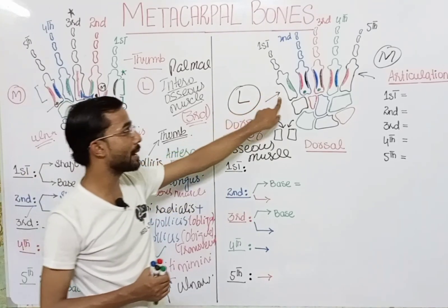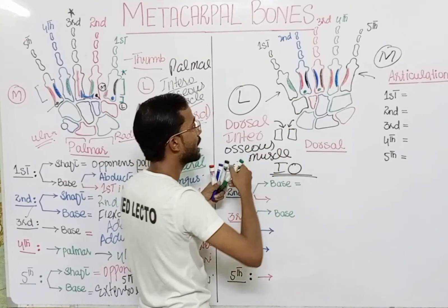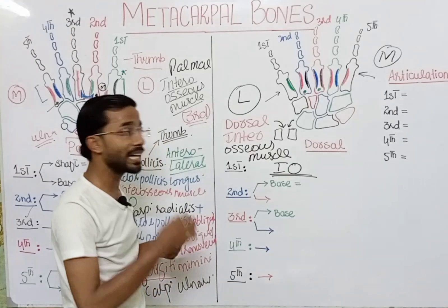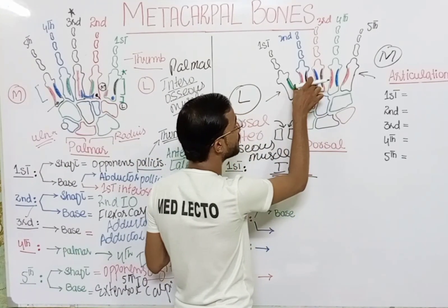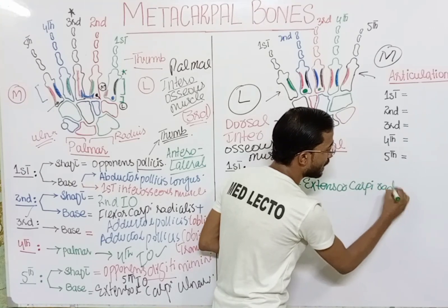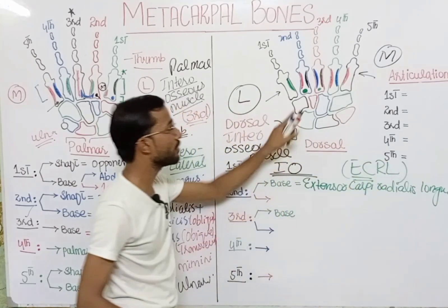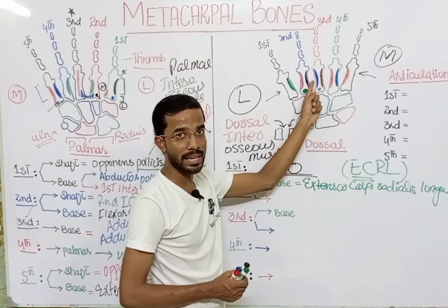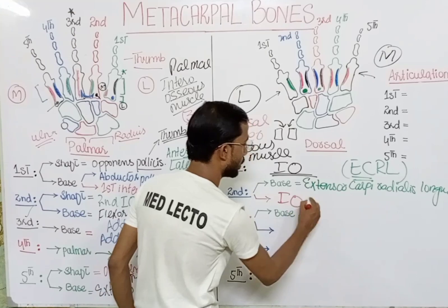At the first metacarpal on the dorsal aspect, you will see the attachment of the first interosseous muscle — the greenish area shows this attachment. At the base of the second metacarpal on the dorsal aspect, the extensor carpi radialis longus muscle attaches. You will also see the interosseous muscle attachments indicated by the red and black areas.